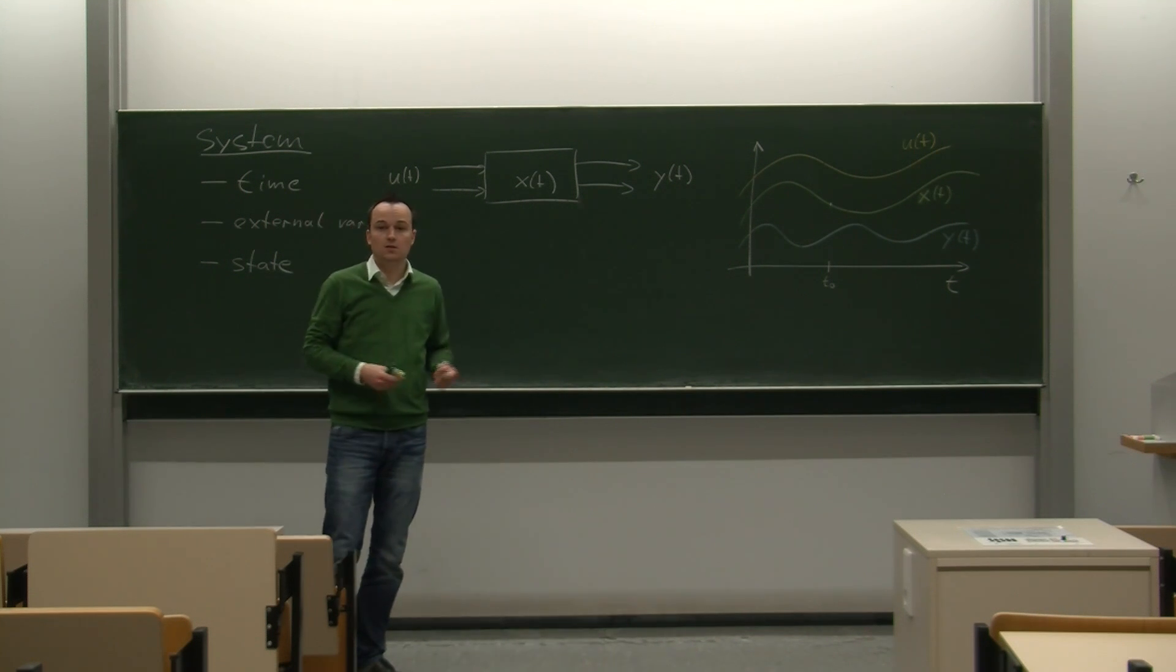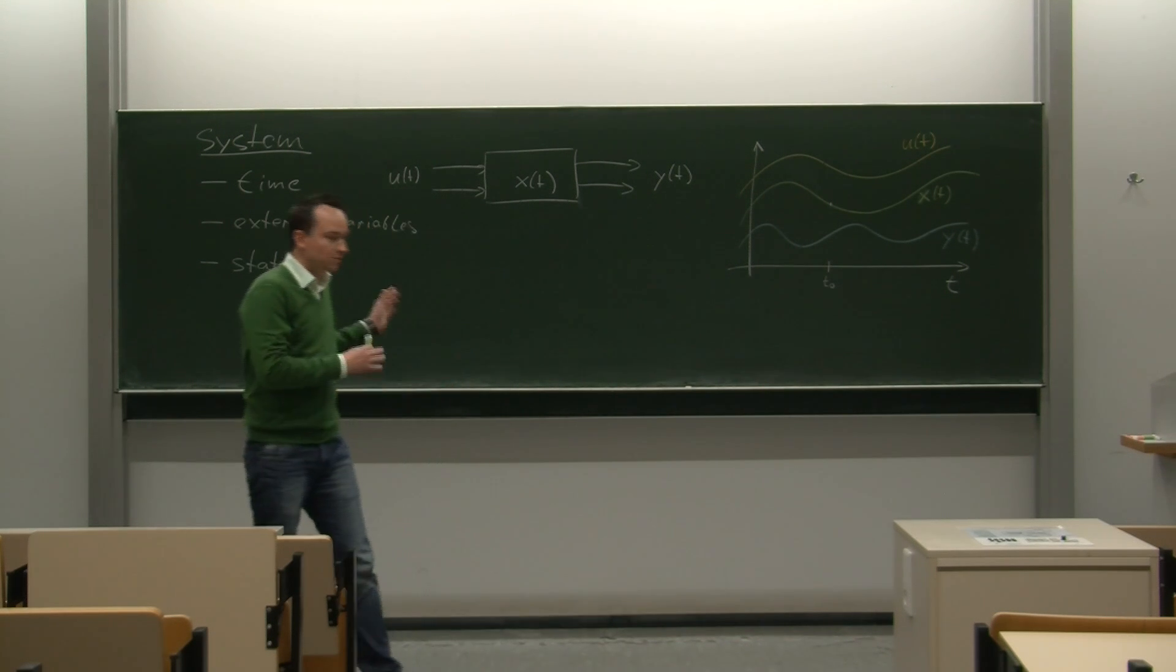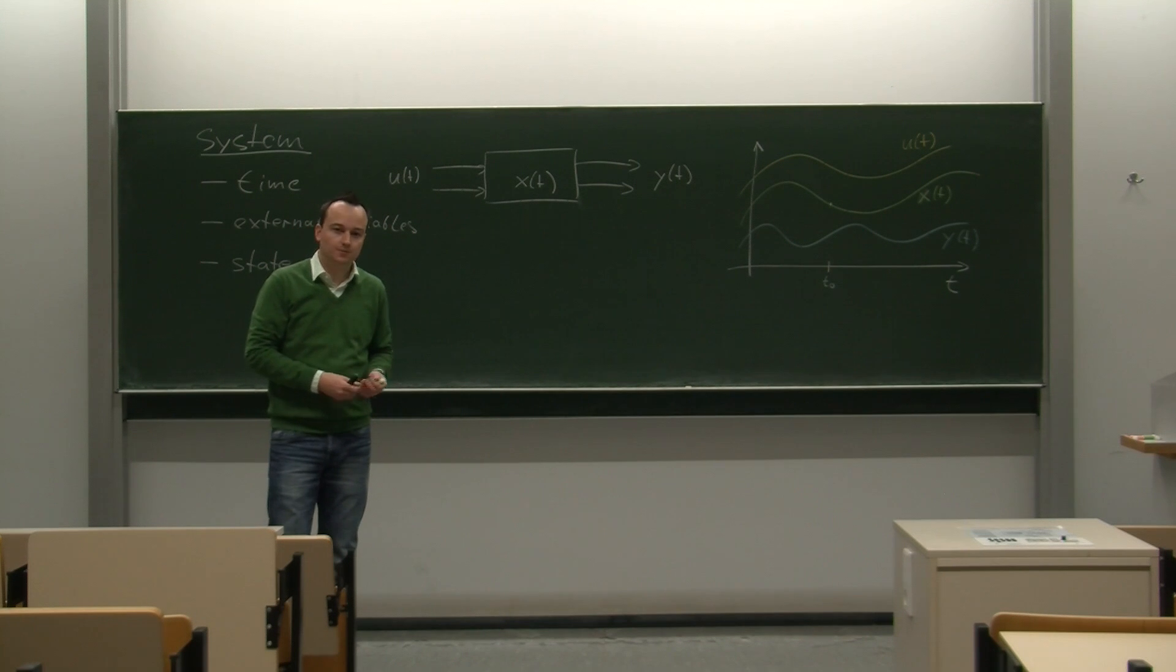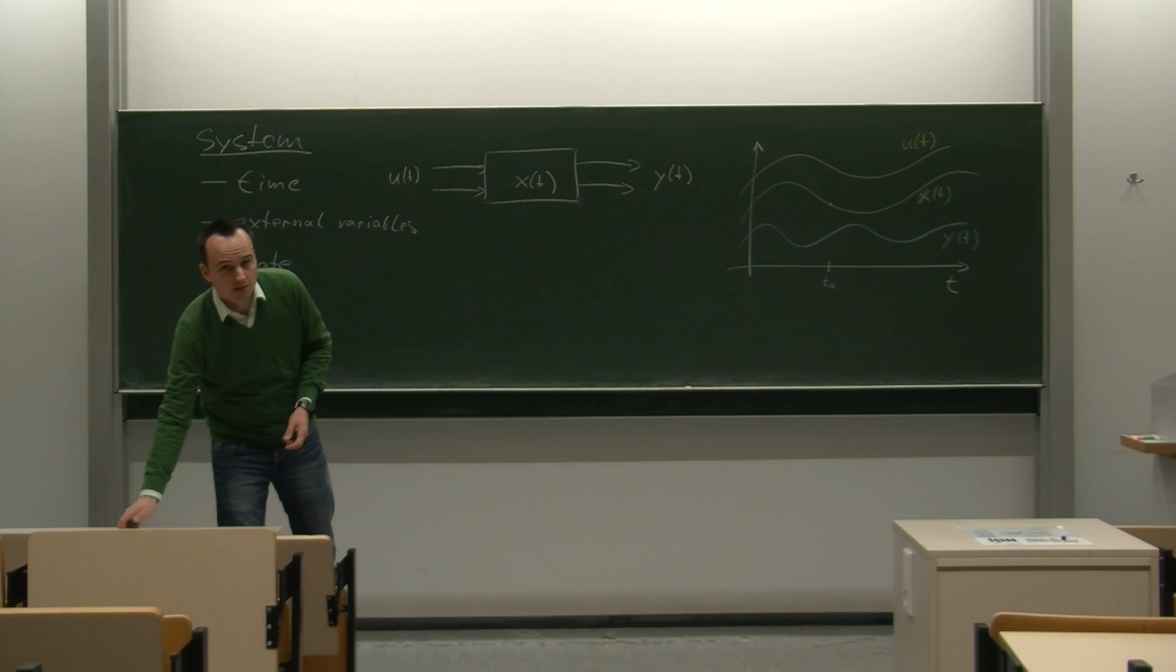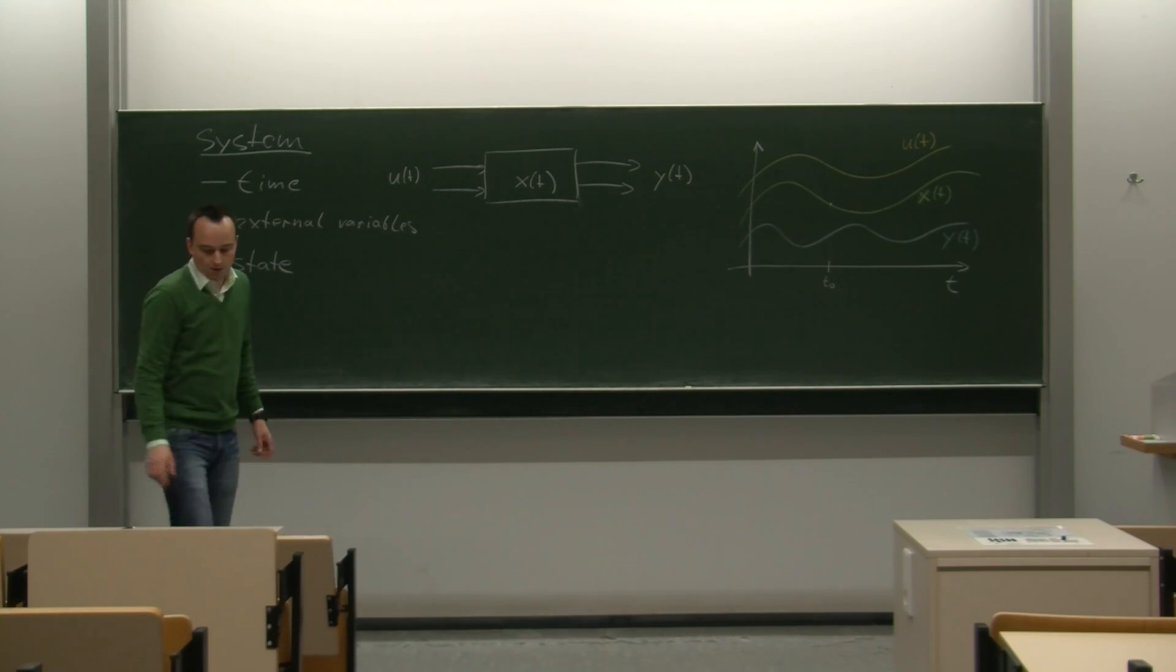There is also a theory of dynamical systems, and to distinguish these objects from what is studied there, these are often called control systems. And dynamical systems, in some sense, are a subset of control systems.